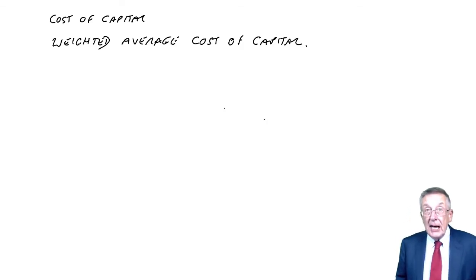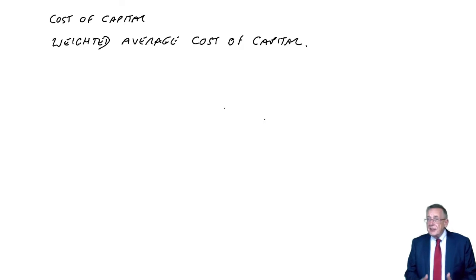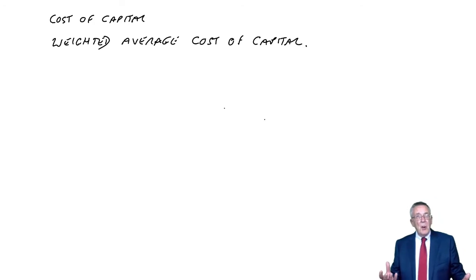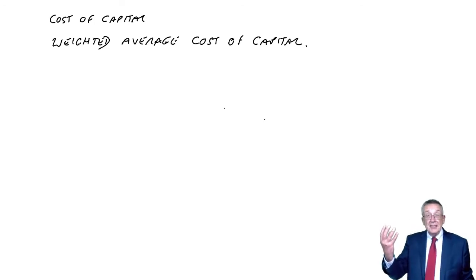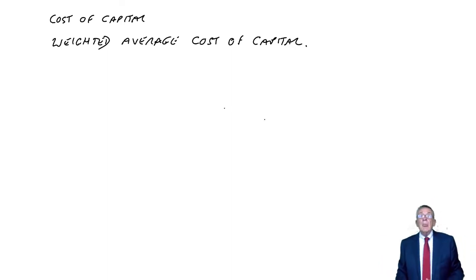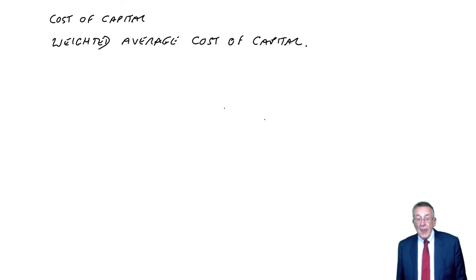Finally, though, in this lecture, we need to put the two together because as I did say at the end of the last one, companies of course tend not to borrow all entirely from equity or obviously not entirely from debt, but a combination of the two. And we need to be able to calculate an overall or an average cost of borrowing, an average cost of capital, the weighted average cost of capital.